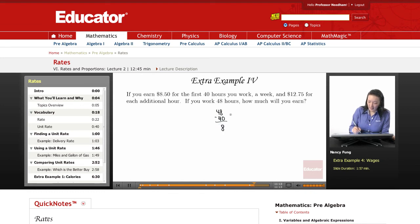So we're going to be left with 8. So we have the 40 hours at $8.50 an hour, and then we're going to have 8 additional hours at a bit more, $12.75.